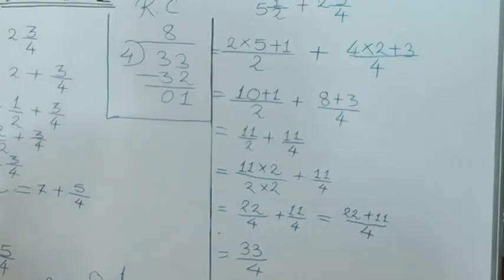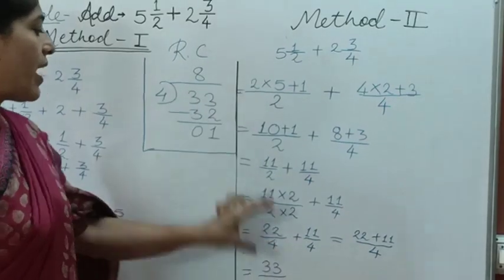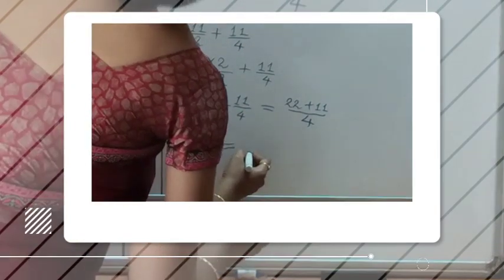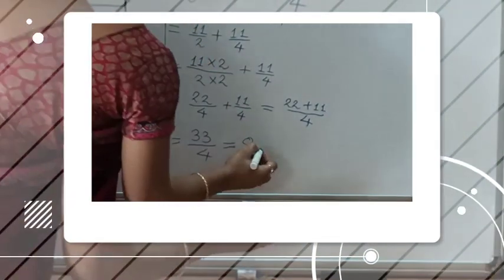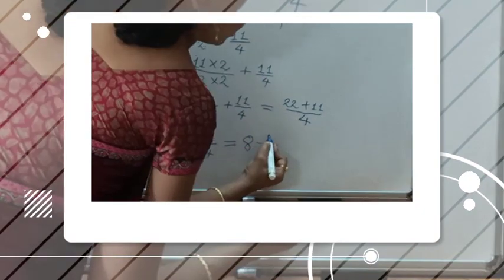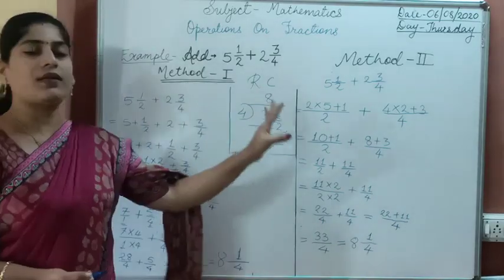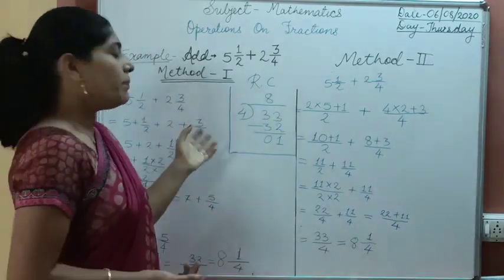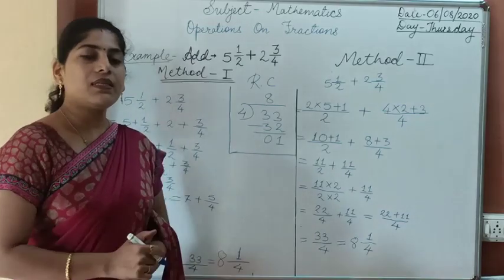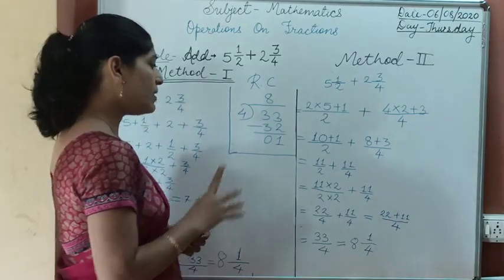We have 33 upon 4, and using the same method in the rough column we convert the improper fraction to a mixed fraction. The answer is 8¹/₄ — the same as method one. Students, you can see the answers are the same. You can solve it by both methods; by whichever you find easier, both methods are correct. Now let us move to subtraction.